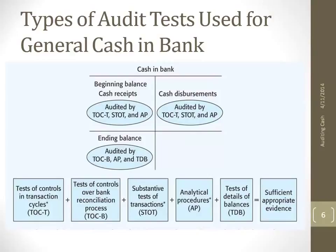For disbursements, same thing — you're going to look at tested controls related to cash disbursements as a result of the expenditure and acquisition cycle, and tested transactions — the types of transactions that are going to impact cash related to that cycle — and then account balances. You can also perform substantive analytical procedures.